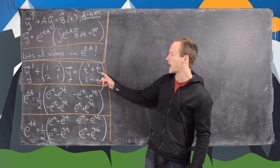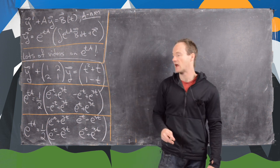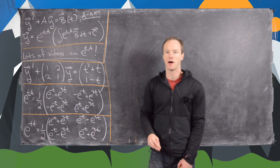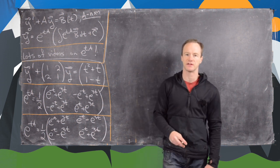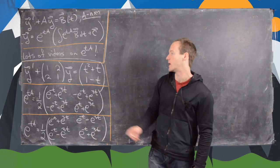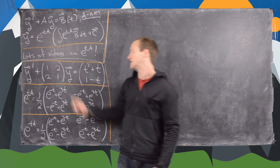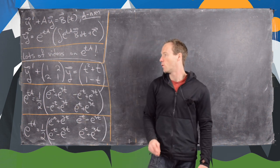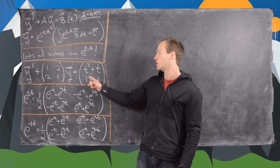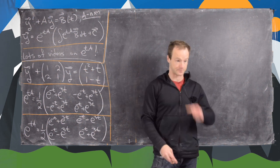So now we want to look at — and first of all, there are lots of videos I've done on e to the tA, because I use this as a common method for solving these systems. We want to solve: y prime plus the matrix [1, 2; 2, 1] times y equals the vector function [t squared plus t, 1 minus t].